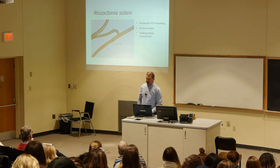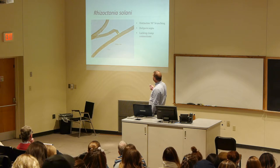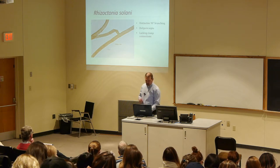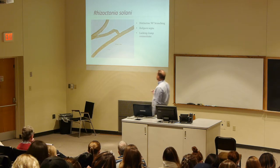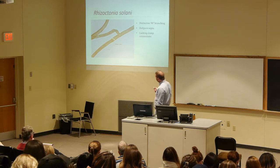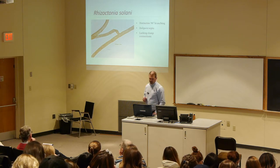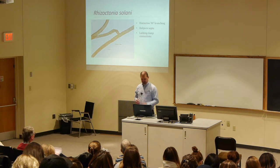Rhizoctonia has distinctive 90-degree branching with a constriction at the branch point. It also has what we call a dolipore septum — pretty unique to this group of fungi.